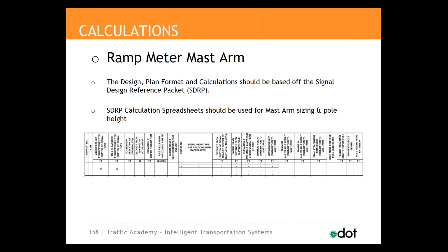One additional calculation required, if ramp meters are included in the project, is for the ramp meter mast arms. The signal design reference packet includes a spreadsheet to determine mast arm height, width with or without an extension, the area moment design factor, and whether a dampener is required. Inputs needed include the foundation elevation at ground level, types of signal heads, distance the signal head and signs are mounted from the support pole, elevations at the pavement under the signal heads, and total mast arm length. This spreadsheet should be used for all mast arm sizing and pole heights related to ramp meters.